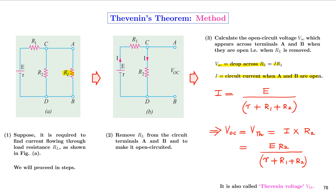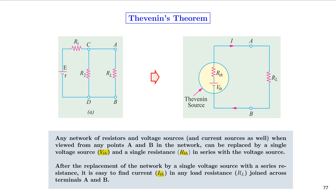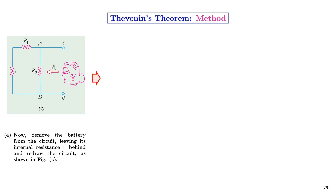This completes the first step in reducing a circuit using Thevenin's theorem — we have found the voltage source in the simplified circuit. Now we find the series resistance RTH. To calculate RTH, we remove any battery and replace it with its internal resistance. If the internal resistance is zero, we place a short. If we have a current source, we replace it with an infinite resistance, leaving that terminal open-circuited.